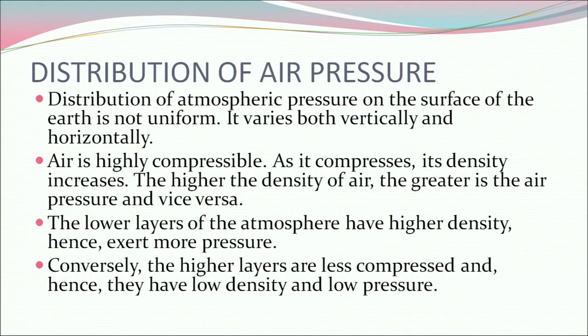Now let's understand the distribution of air pressure. Distribution of atmospheric pressure on the surface of the earth is not uniform — it varies both vertically and horizontally. Air is highly compressible; as it compresses, its density increases. The higher the density of air, the greater is the air pressure and vice versa. The lower layers of the atmosphere have higher density, hence exert more pressure, while higher layers are less compressed, with low density and low pressure.